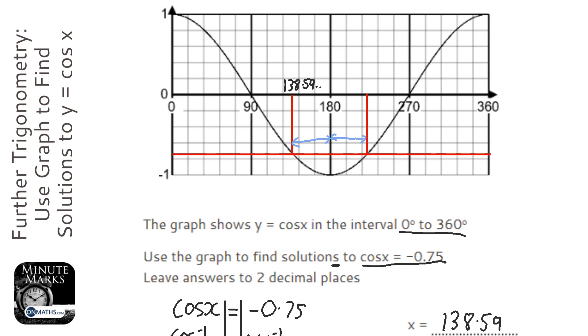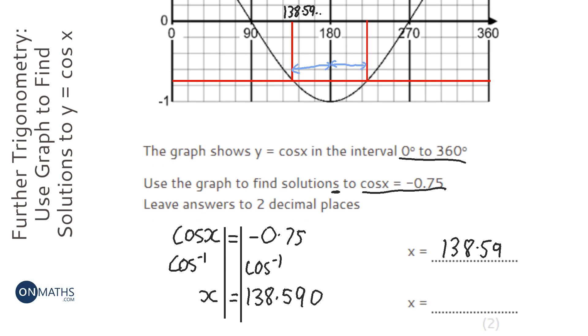So we could also take it away from 360, you'll get the same answer, that's probably easier, let's do it that way. So 360 take away 138.59, and the calculator gives me the answer of 221.41.